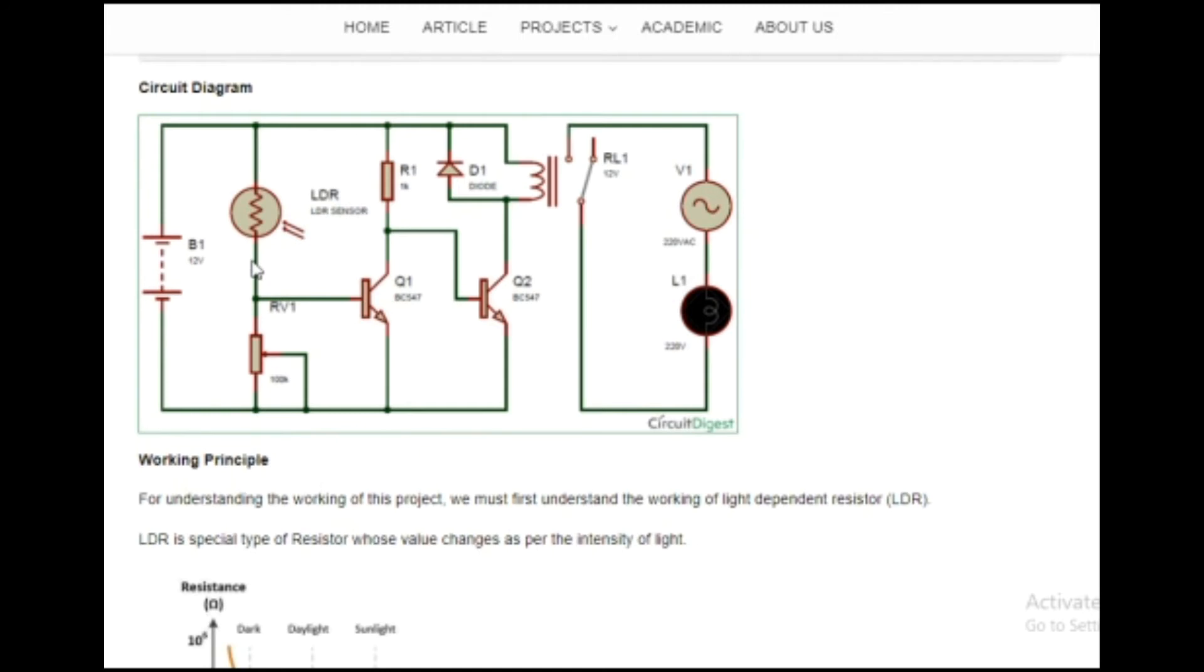In condition 2, during the nighttime, there will be low intensity of light falling on this LDR, so its resistance will be very high. There will be no voltage appearing across this transistor, so the first transistor will be in idle state. But this voltage will appear across this second transistor and the base-emitter junction will be forward biased, which will trigger this relay and our bulb will glow. This is the working of our circuit diagram with the bulb glowing during the nighttime and not glowing during the daytime.